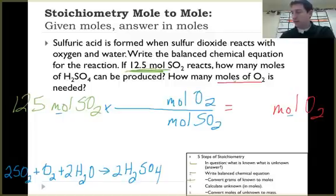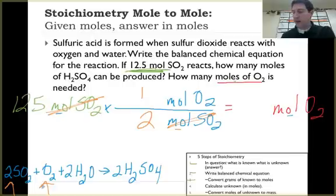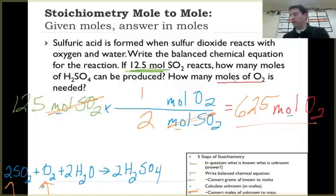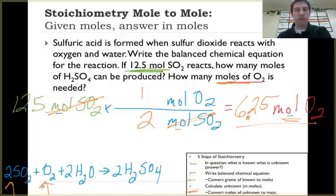I put moles of O2 on top and look at the balanced equation. I see two moles of SO2 and one mole of O2. The SO2 cancels out, so I just do the math: 12.5 times 1 divided by 2 gives me 6.25 moles of O2. I look at step five — my question asks for moles of O2, and I already have it in moles. I'm all done with my mole-to-mole stoichiometric calculation.